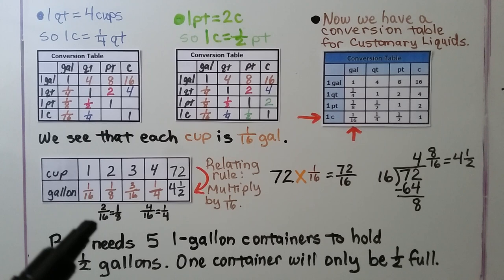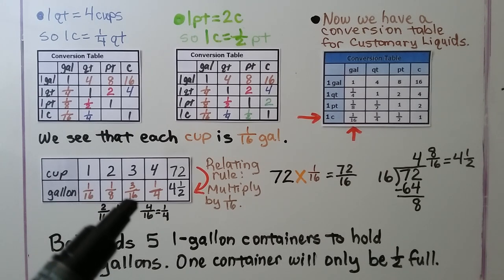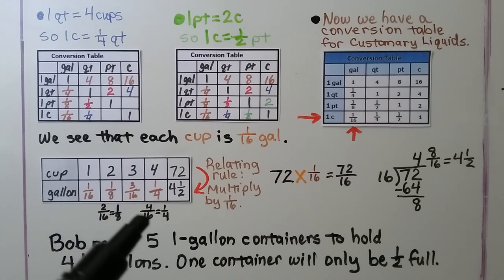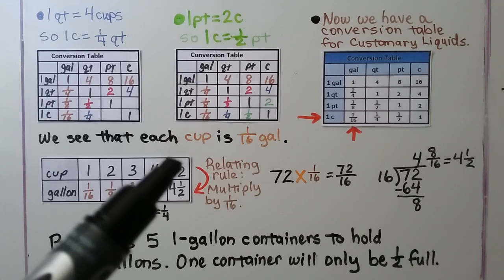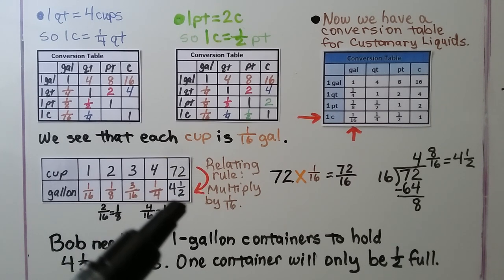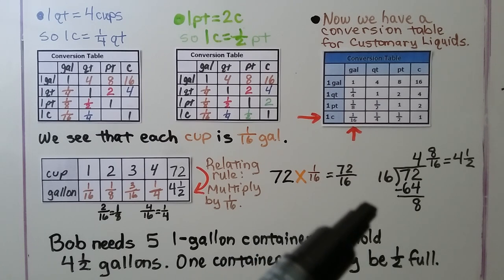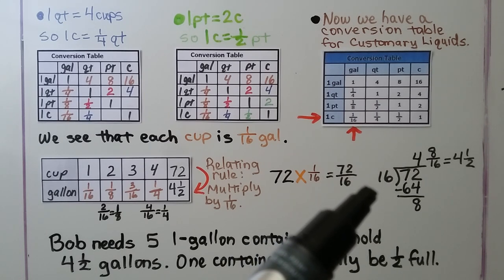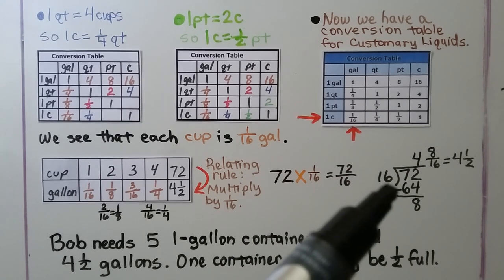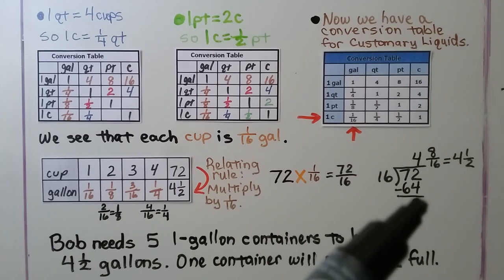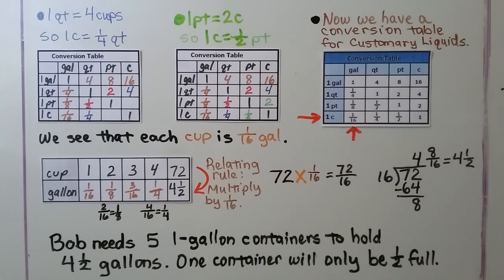Two cups would be two-sixteenths, which simplifies to one-eighth. Three cups would be three-sixteenths. Four cups would be four-sixteenths, which simplifies to one-fourth. For 72 cups, the relating rule is multiply by one-sixteenth. We do 72 times one-sixteenth, which is 72 sixteenths. Sixteen fits into 72 four times (16 × 4 = 64), with a remainder of 8, giving us four and eight-sixteenths, which simplifies to four and a half gallons.